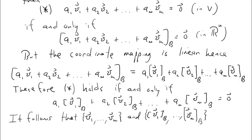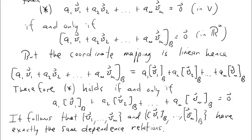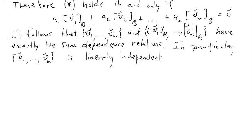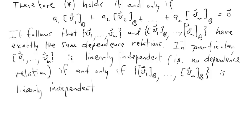It follows that the set v1 down to vm and the corresponding set of coordinate vectors have exactly the same dependence relations, because these equations are dependence relations if any non-zero scalars solve them. In particular, v1 down to vm is linearly independent — there's no dependence relation — if and only if the set of coordinate vectors is linearly independent. This completes the proof. QED.